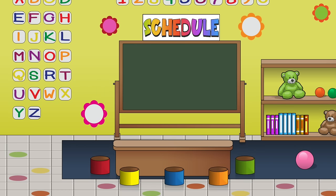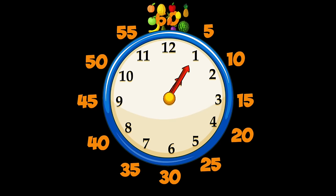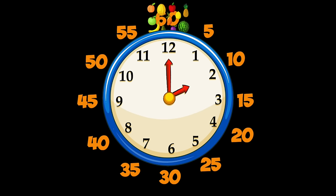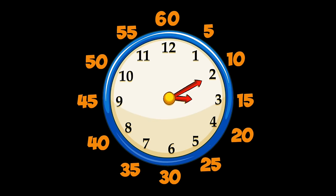It was 5, 10, 15, 20, 25, 30 — that's a half hour and we're still really hungry. 35, 40, 45, 50, 55, 60 — where's our fresh fruit? Well, 60 minutes is one hour, so I guess it's fresh fruit time!